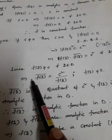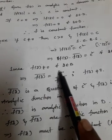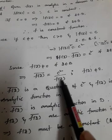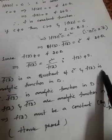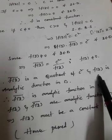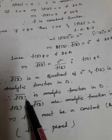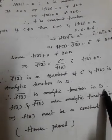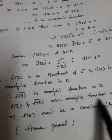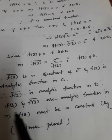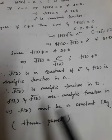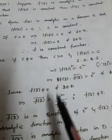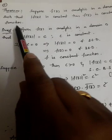Therefore f(z̄) is the quotient of the constant C² and the analytic function f(z), so f(z̄) is analytic in D. Thus both f(z) and f(z̄) are analytic in D. By the previous theorem, f(z) must be constant. This proves that if |f(z)| is constant in D, then f(z) is constant. This is also a theorem they may give for four marks.